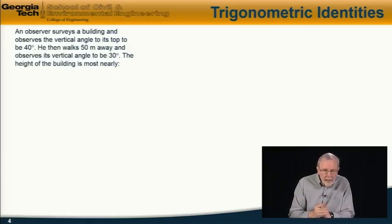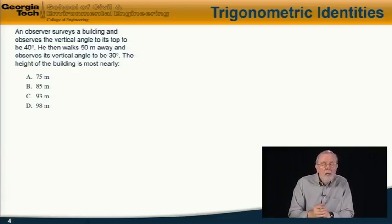Let's do an example. An observer surveys a building and observes that the vertical angle to its top is 40 degrees. He then walks 50 meters farther away and observes the vertical angle to be 30 degrees. The height of the building is most nearly which of these alternatives?